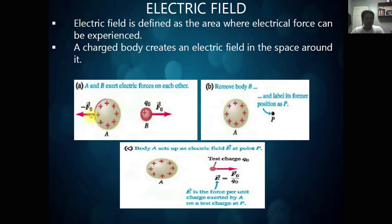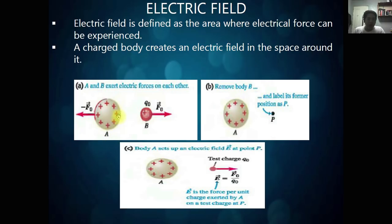Electric field, as I have said, is defined as the area where electrical force can be experienced. Every charged body creates an electric field in the space around it. As we can see here in our first figure, we have a positive charge body — let's call that A — and we have a test charge, or a very small amount of charge, Q sub O. So let's call that B. According to Coulomb's law, there is a force that exists between these two charges.